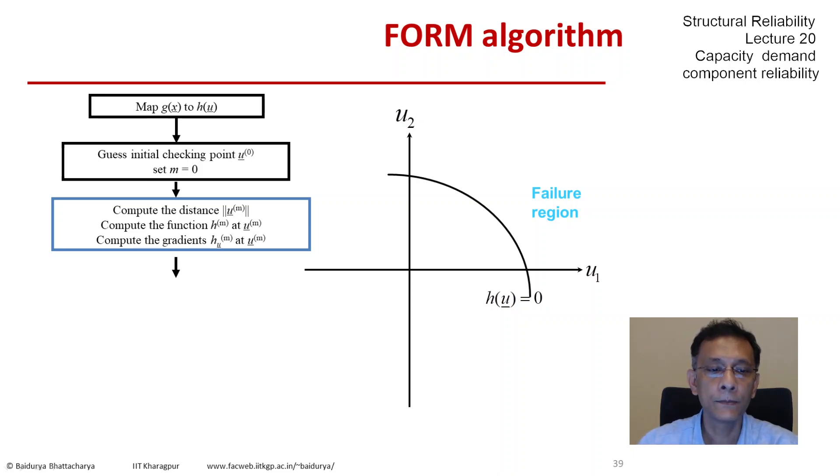We compute the gradients of the function at that point. Obviously, the gradient vector is very useful because it points in the direction of the most rapid increase of that function. That's the basis. Then we store the distance and obtain the gradients alpha.